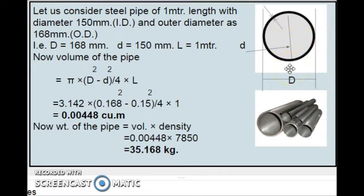To calculate the weight of these pipes, first we have to calculate the volume. Volume of this area, volume of the pipe. The formula is pi into capital D square minus small d square, whole thing divided by 4, into length.